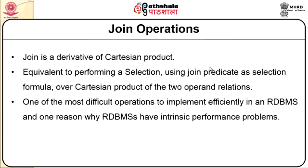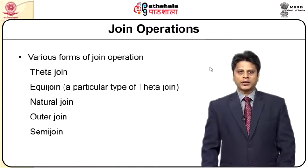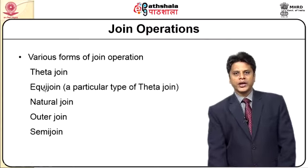The join operator is very important when marching towards optimization of a query. Join is a derivative of Cartesian product, equivalent to performing a selection using a join predicate as a selection formula over the Cartesian product of two operand relations. It is one of the most difficult operations to implement effectively in an RDBMS and one reason why RDBMS have intrinsic performance problems. There are various join operations: theta join, equi join, natural join, outer join, and semi-join.